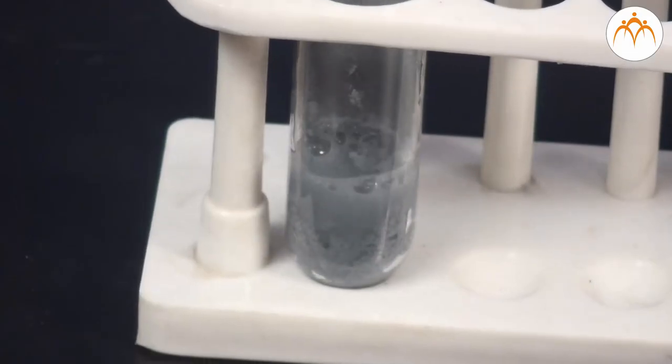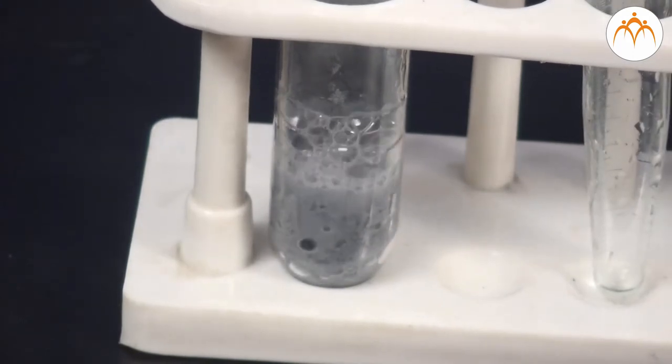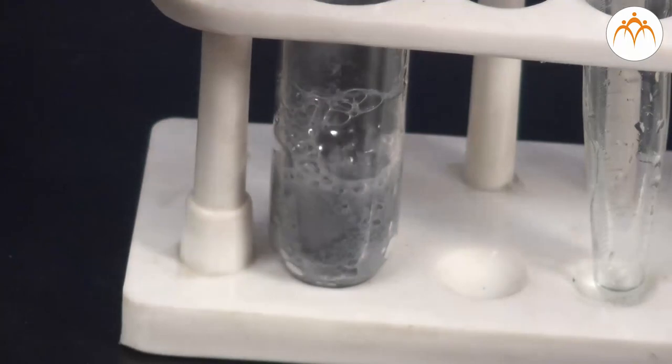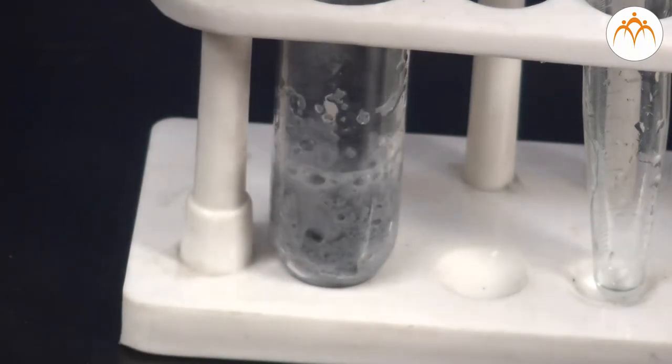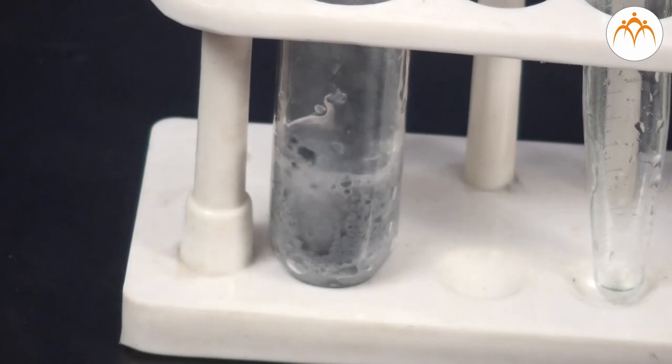A delivery tube is fixed in a cork. This is fitted to the test tube. You will find that the chemical reaction starts and some bubbles come off means product of this reaction is a gas.